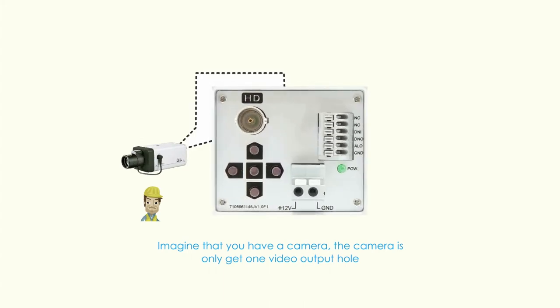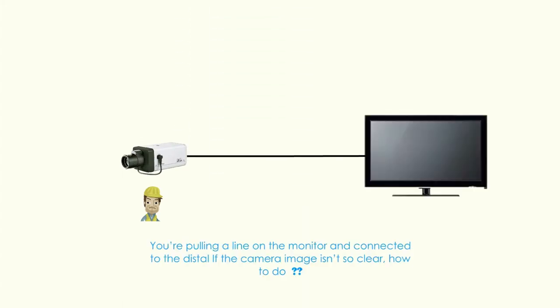Imagine that you have a camera, the camera only gets one video output. You are pulling a line on the monitor and connecting it to the desktop. If the camera image isn't so clear, how to do?